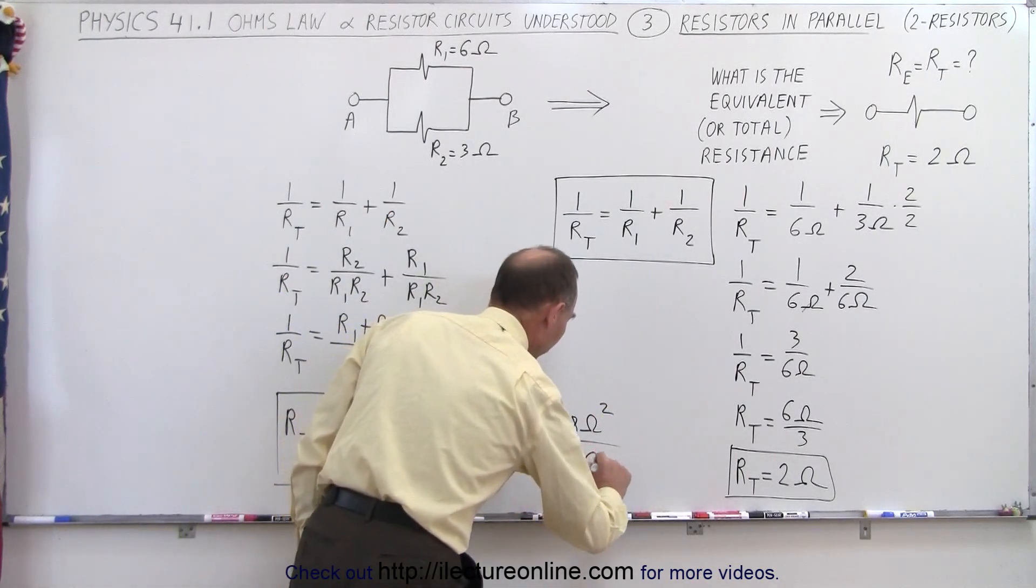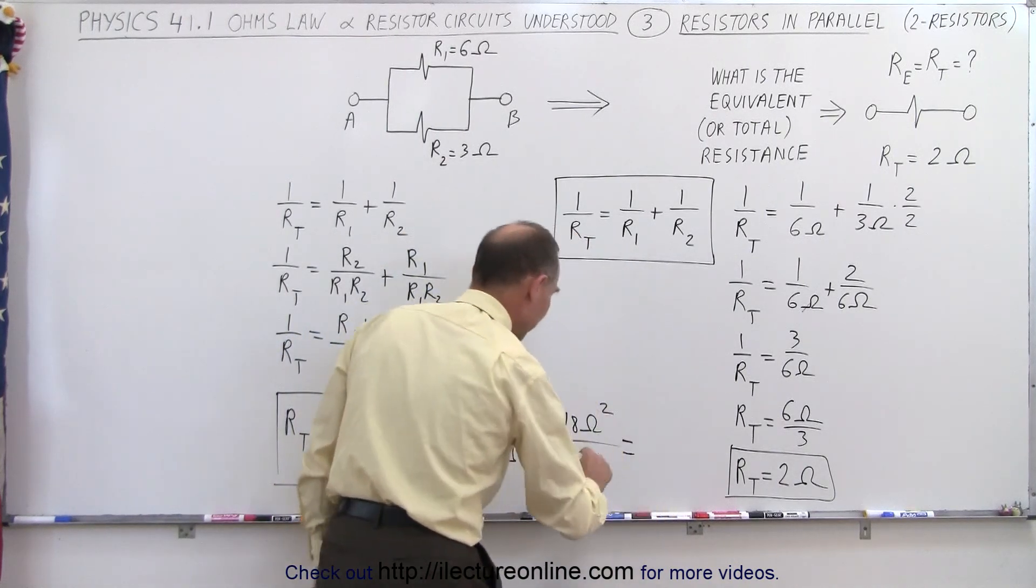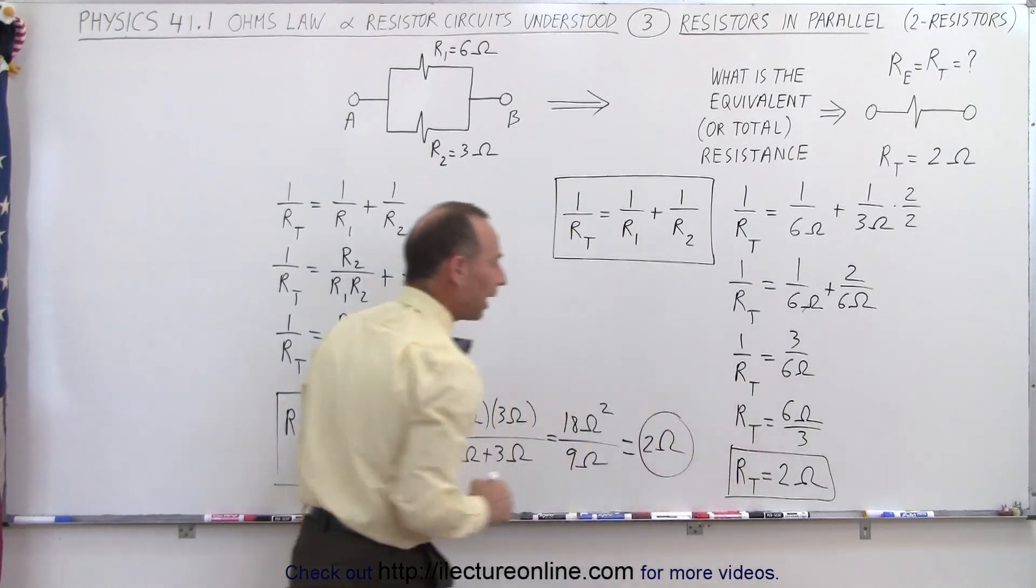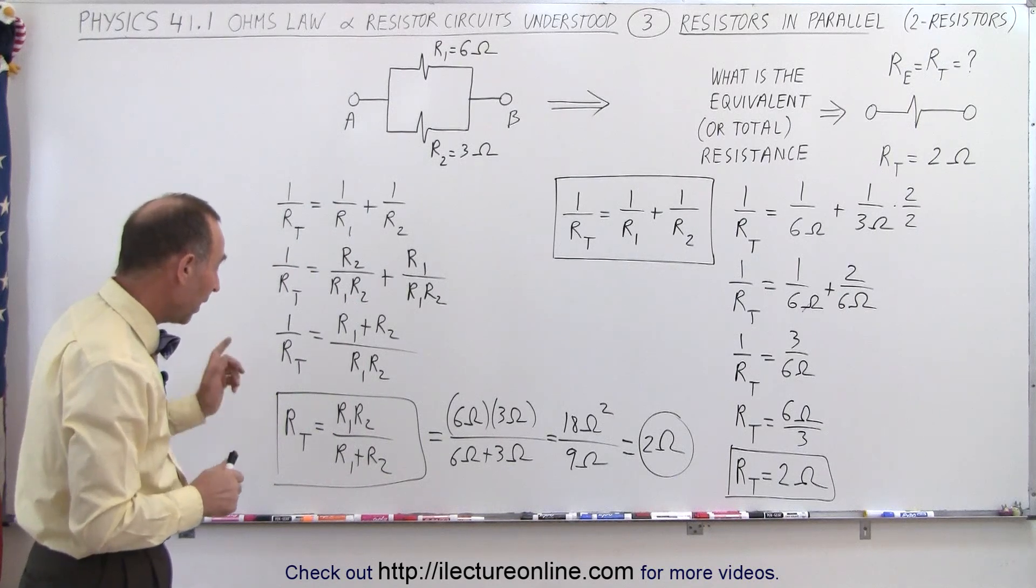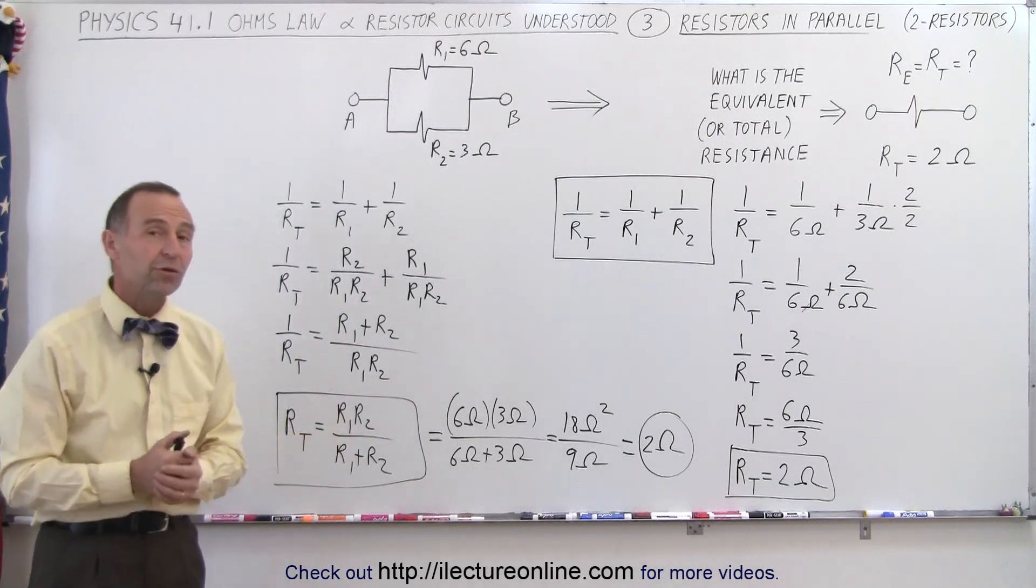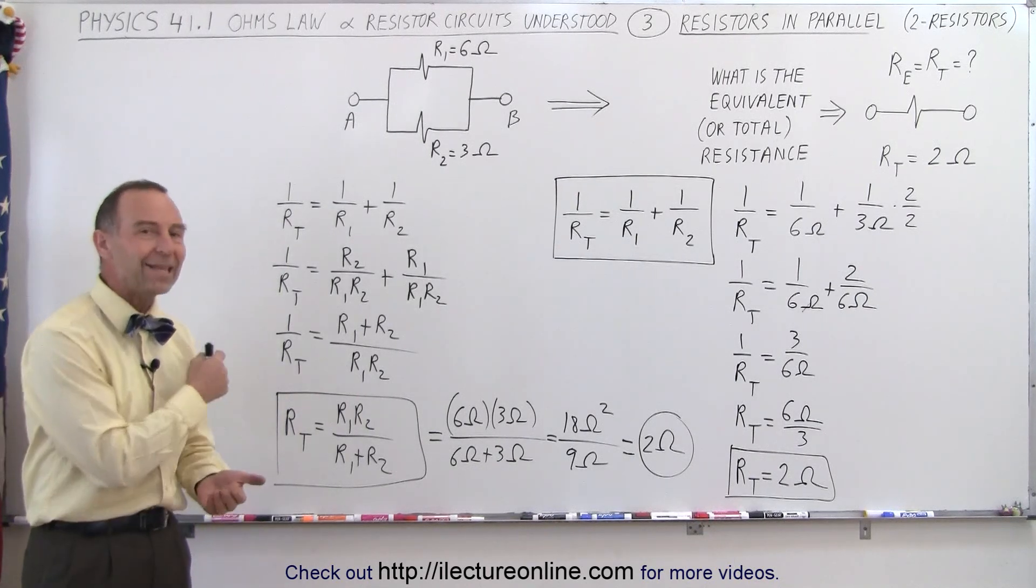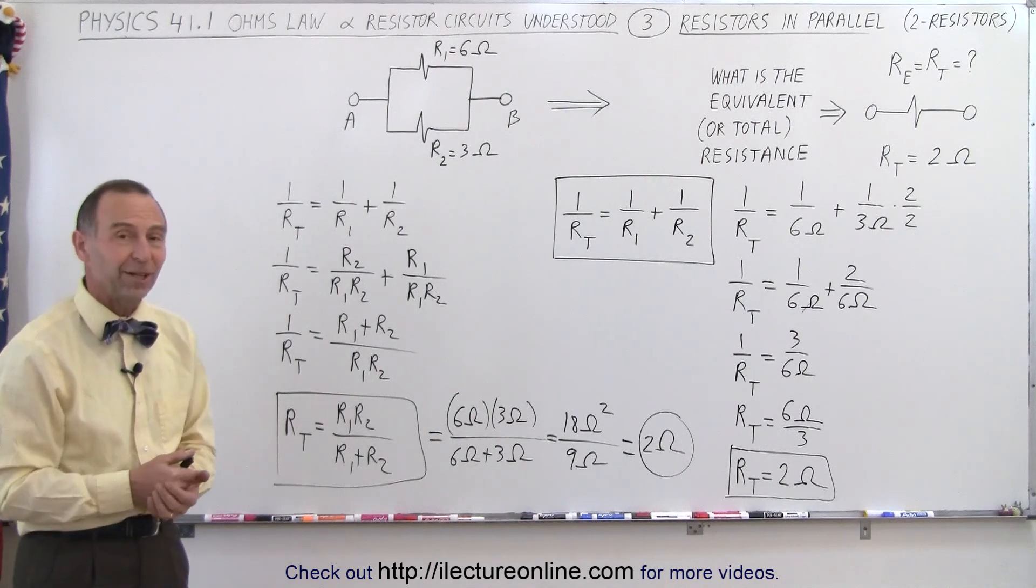Notice one of the ohms cancels out, and we end up with 18 divided by 9, which is 2 ohms, which is the same result that we got before. So either equation will give you the exact same answer. But this one is probably easier to use when using just two resistors in parallel. You quickly do the product over the sum, and you have the equivalent resistor, or resistance. And that's how it's done.